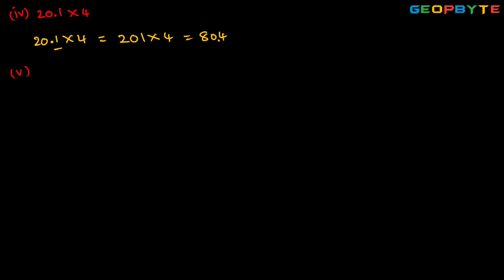Next, fifth one: 0.05 into 7. We need to remove the decimal point; if we remove it we get 5 into 7. Five 7s are 35, so we get 35. There are two digits to the right of the decimal point in 0.05. So we move from right to left by two positions — first position then second — and place the dot after, giving 0.35. The result of 0.05 into 7 is 0.35.